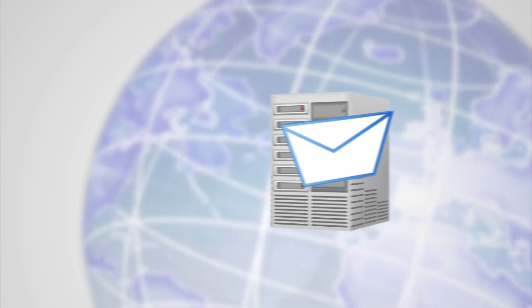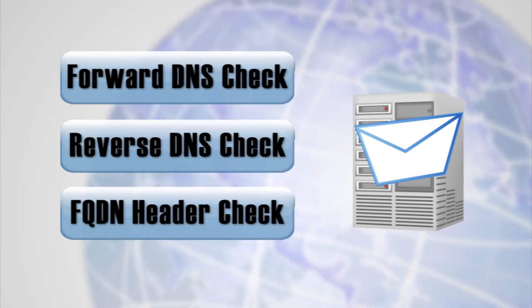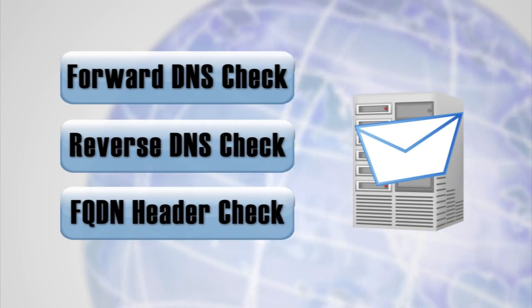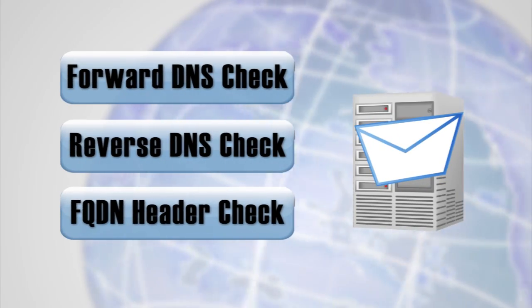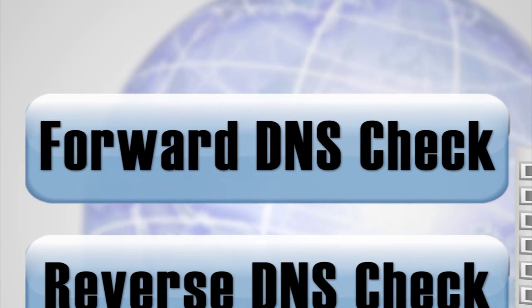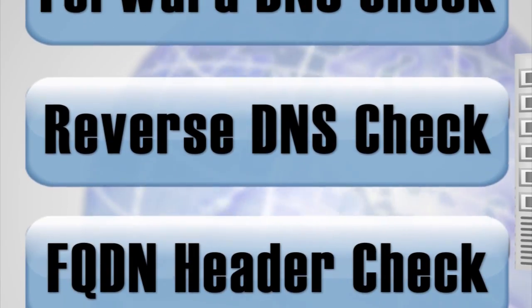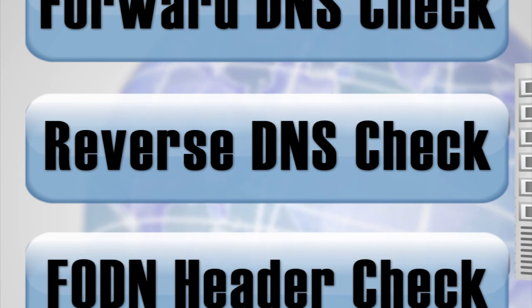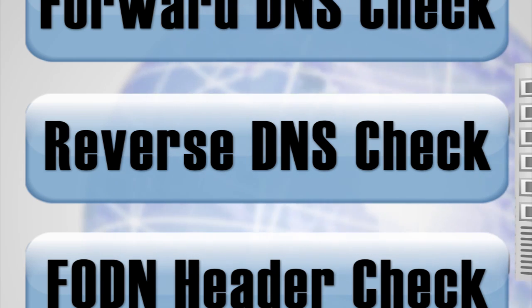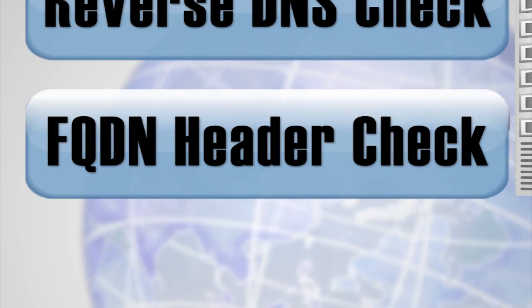When a mail server receives an email, a three-way handshake takes place to verify the sending server. During this process, the forward DNS must match the reverse DNS as defined in in-addr.arpa, which must match the fully qualified domain name in the message header.